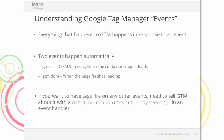Everything that happens within Google Tag Manager happens in response to an event. Two events happen automatically: the gtm.js event, which fires when the container snippet loads, and the gtm.dom event, which fires when the page finishes loading. If you want tags to fire on any other events, you need to tell GTM about it via the dataLayer.push event in the event handler. Further details on Google Tag Manager events can be found in the developer docs in the resources widget.